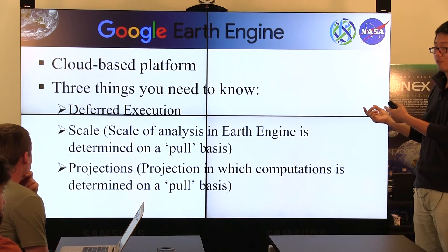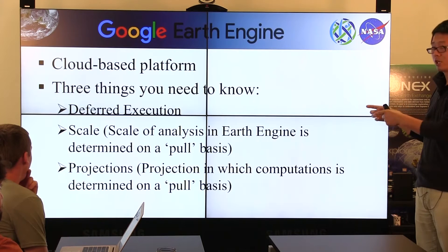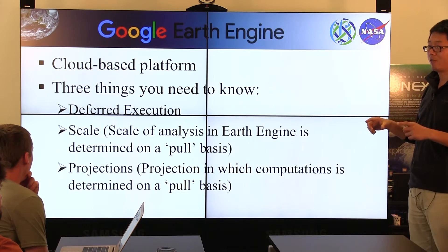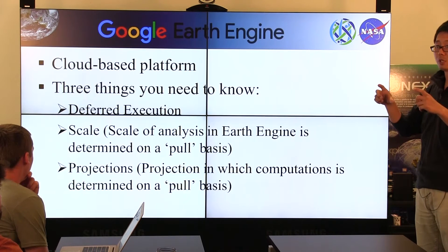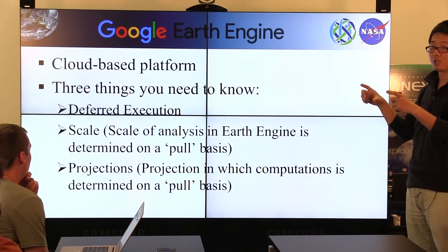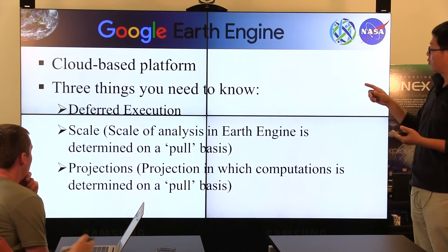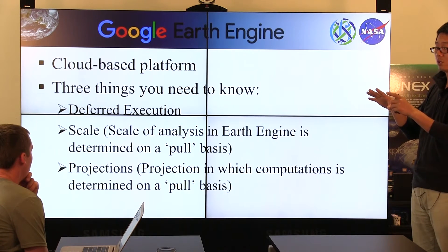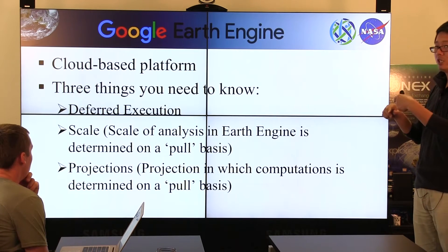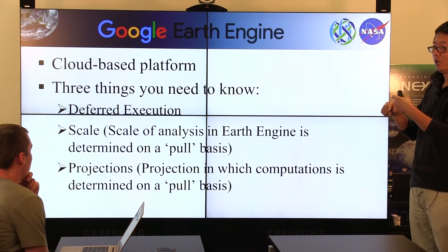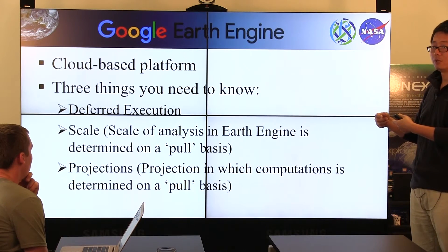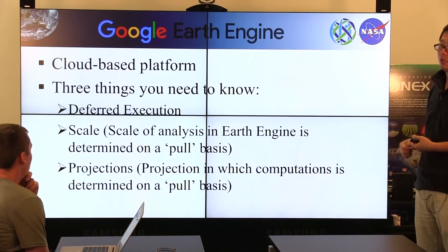The code is transferred to server-side objects. In JavaScript we have objects, but they are not real objects — we call them proxy objects. Every time you submit your code to the Google Earth Engine server side, it will transfer your code to a JSON object, and then the server side will run your code and give back your result.